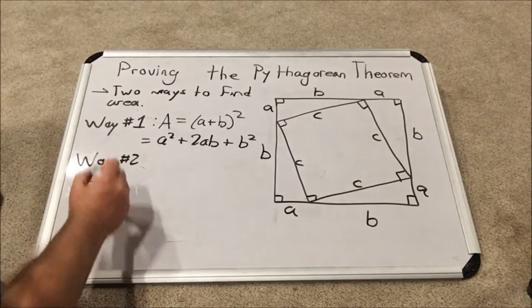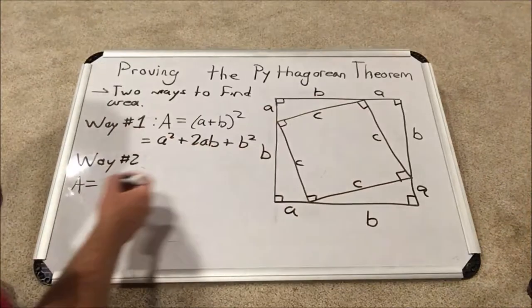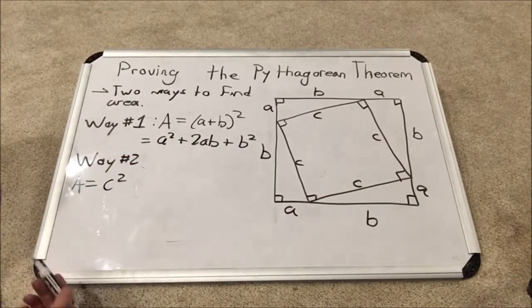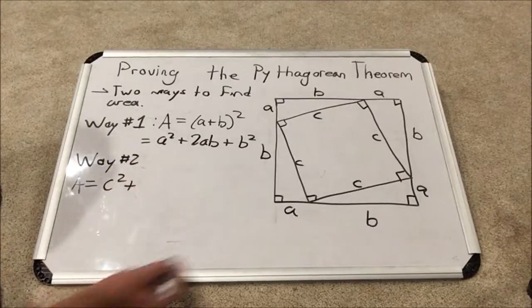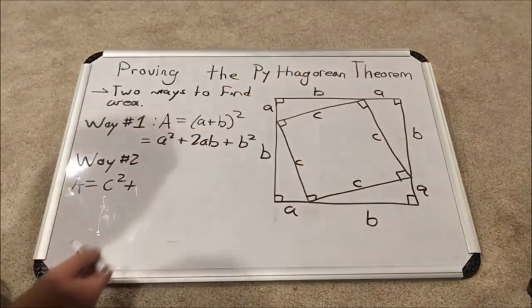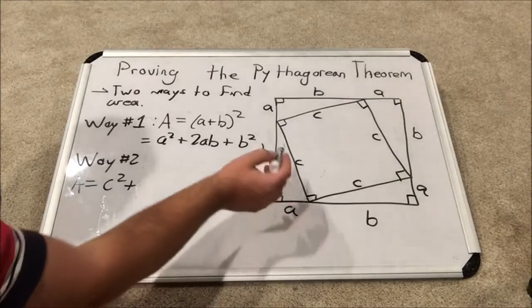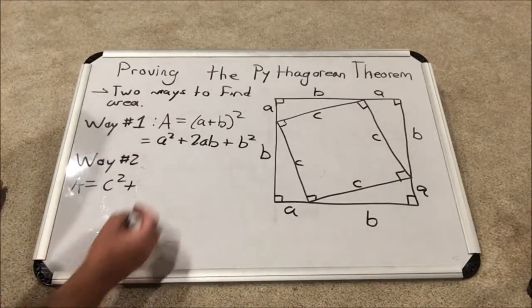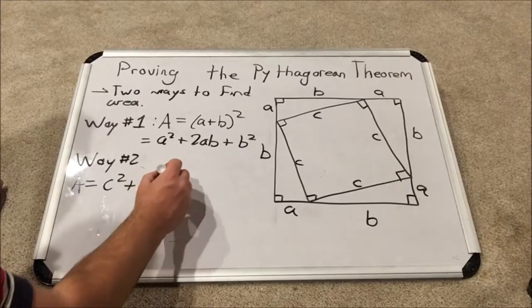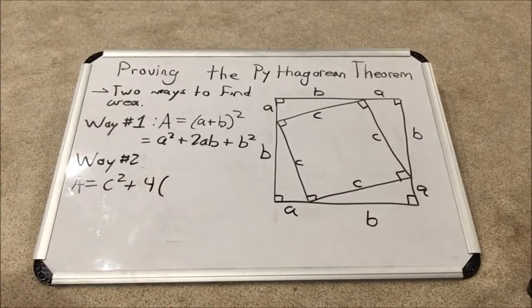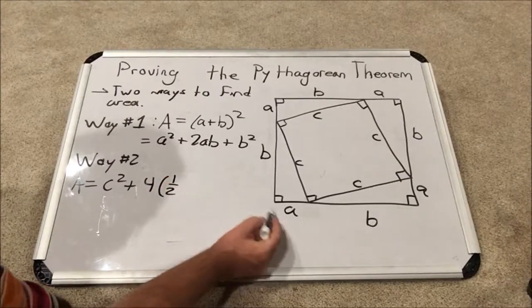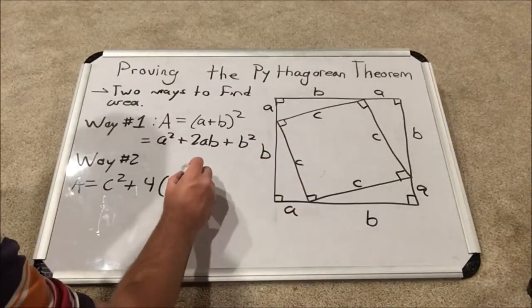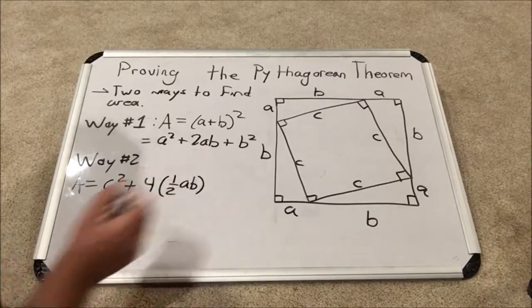The area equals the area of the inner square, so that's side squared, that would be C squared, plus the area of these four right triangles. They are all identical because they all have sides A, B, and C, and they are right triangles. Now the area of each of them will be one-half base times height. You can think of A as the base and B as the height.